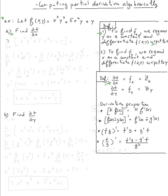So we're finding the partial with respect to x of x²y⁷ + 5x⁴y + y. When you do partial derivatives, one variable is held constant, so all the standard derivative properties hold. We can use the sum rule: the derivative of a sum of functions equals the sum of the derivatives. So this equals the partial with respect to x of x²y⁷, plus the partial with respect to x of 5x⁴y, plus the partial with respect to x of y.